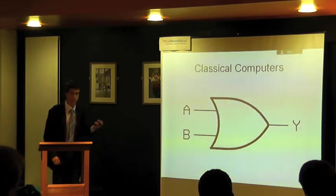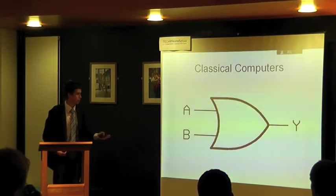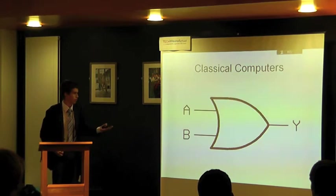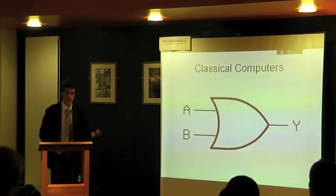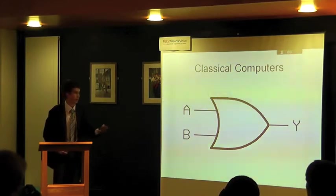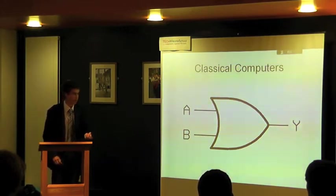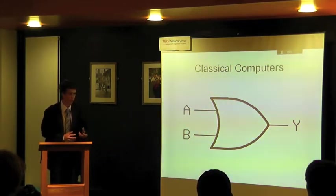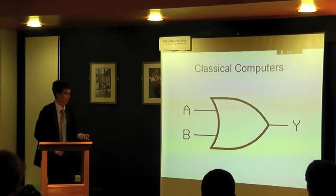Now, the combination of these gates allows you to solve any mathematical problem given an infinite amount of time. People started mixing these together and started making addition. Additional machines was the first thing that was actually made. And then people said, if I can do addition, then by changing it slightly, I can do subtraction, and then multiplication and division. And then you get more and more. From that, you can do any kind of mathematics. And using any kind of mathematics, we can really do anything.